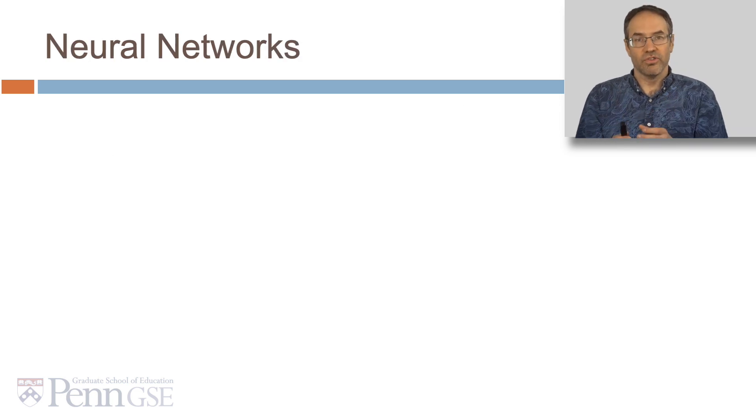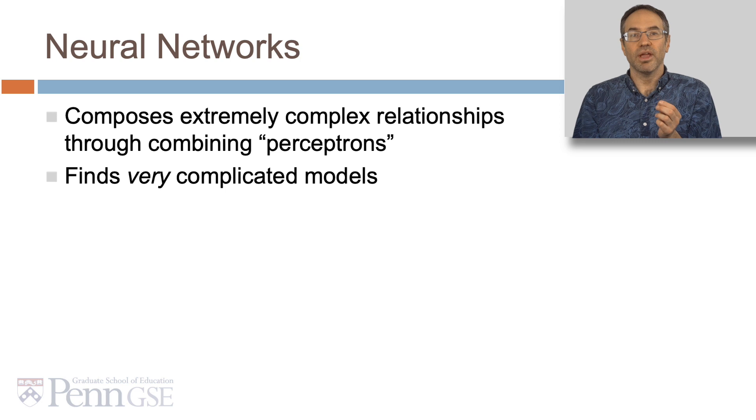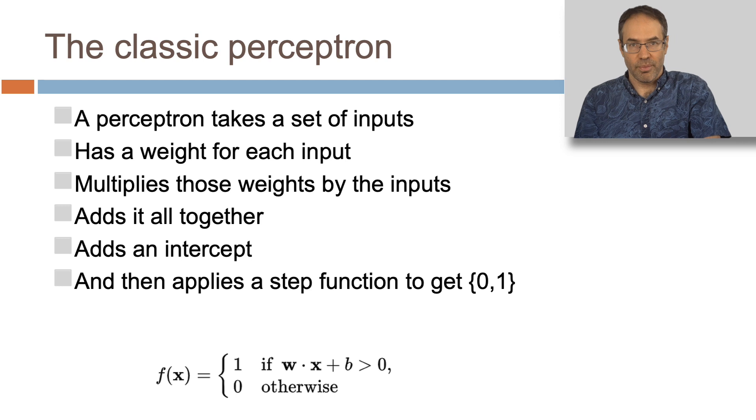Neural networks compose extremely complex relationships through combining what are called perceptrons. They find very complicated models. Perceptrons have evolved a lot over the years, but let's start with the classic perceptron.